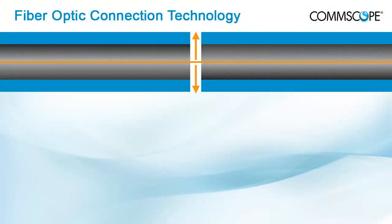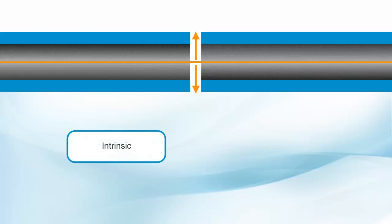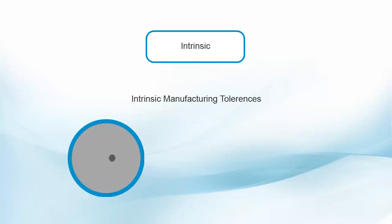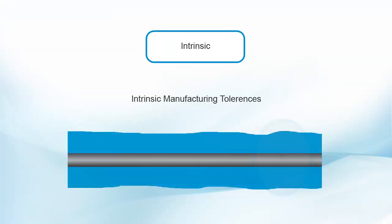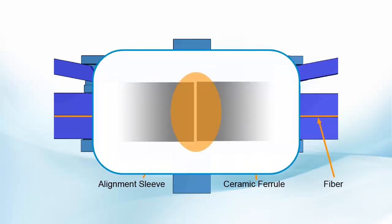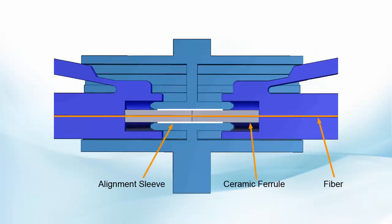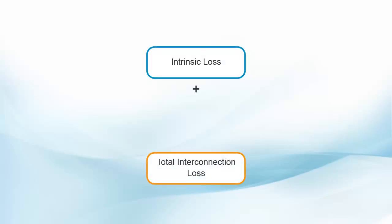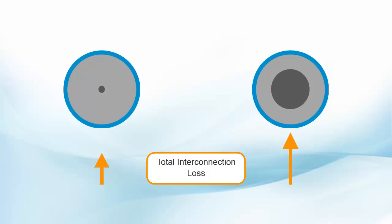Interconnection loss associated with splices and connectors can be divided into two components, intrinsic and extrinsic. Intrinsic mechanisms are a direct function of manufacturing tolerances on fiber core quality, ovality, eccentricity, and delta, outside diameter of the fiber. Extrinsic mechanisms depend on the connection hardware and its ability to control separation between the fiber ends, axial tilt, and fiber transverse offset, normalized to core diameter. The total interconnection loss is the sum of the intrinsic loss and all extrinsic effects, but it is not uncommon to find higher interconnection loss with a larger core fiber compared to a smaller fiber, due to looser fabrication tolerances which lead to more intrinsic loss.